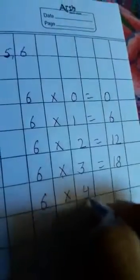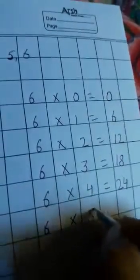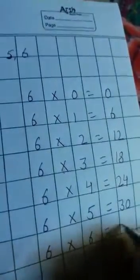6×4's are 24. 6×5's are 30. 6×6's are 36.